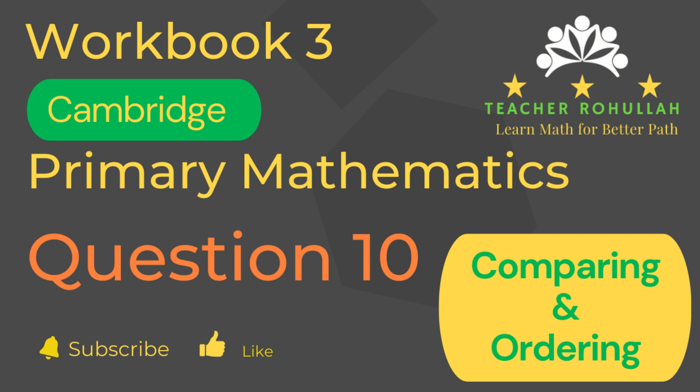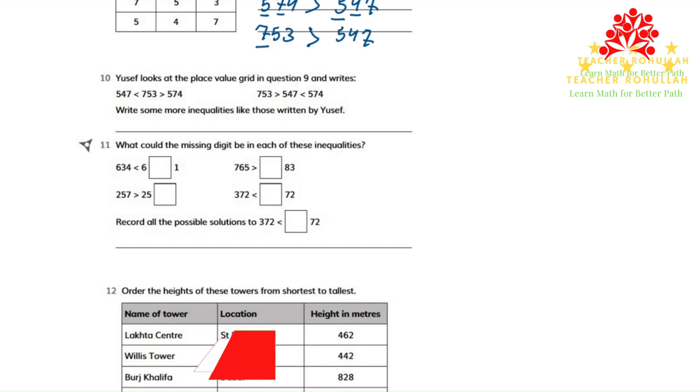Let's now move to the question and solve it. In question number 10, it says, Yusuf looks at the place value grid in question 9 and writes, 547 is less than 753, and 753 is greater than 574.